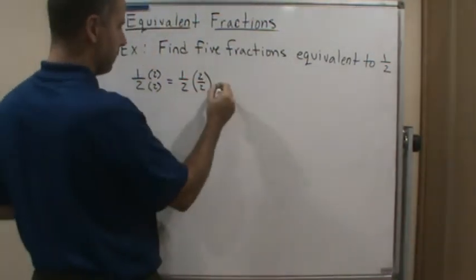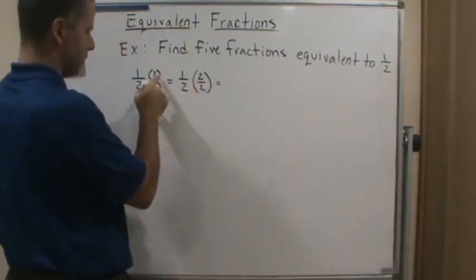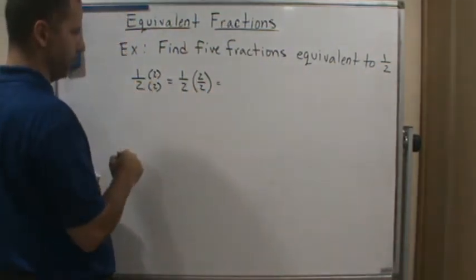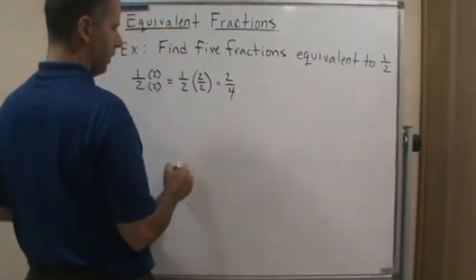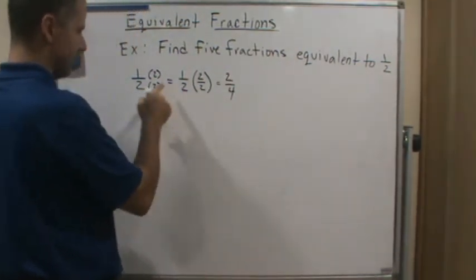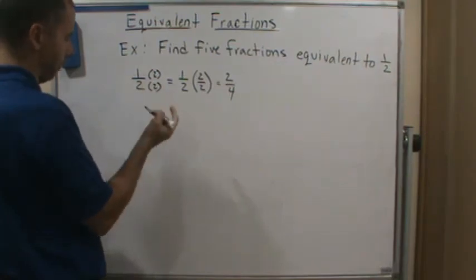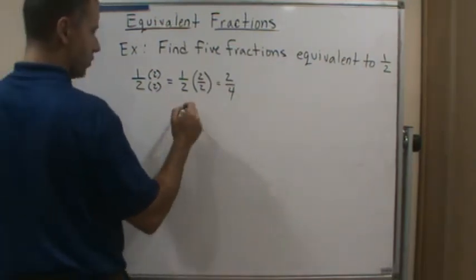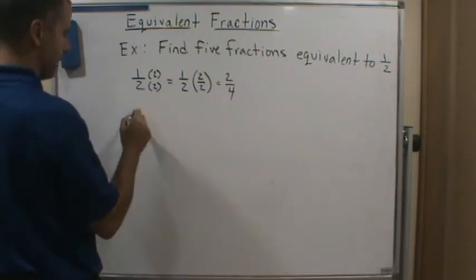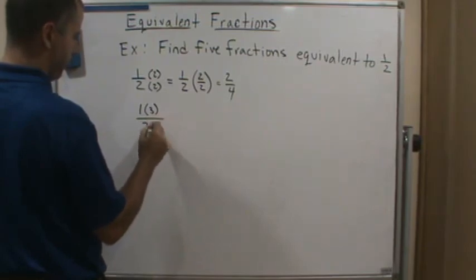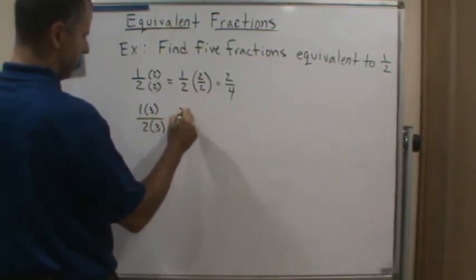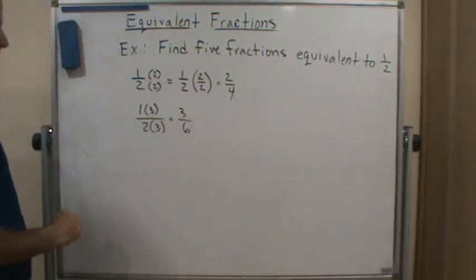So what happens if I multiply by 2 over 2 or just multiply the top and the bottom by 2? Well, I'm going to get 2 fourths. So 2 fourths is the same as a half. Let's continue. So we've got 2 fourths. What about if we multiply the top and the bottom by 3? That's going to give us 3 sixths. There's another one.